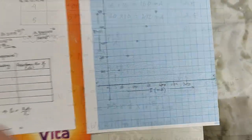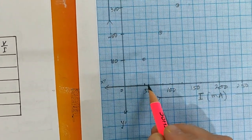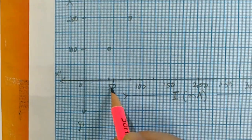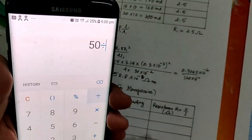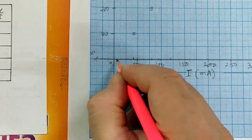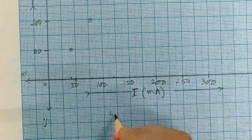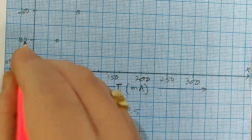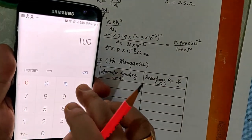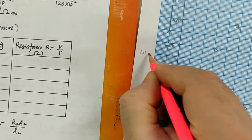Now let's plot the graph. First find the least count of the graph. Along the x-axis, 20 divisions equals 50 milliampere, so 1 division equals 2.5 milliampere — the least count along x is 2.5. Along the y-axis, 100 divided by 20 equals 5, so the least count along y is 5 millivolt.